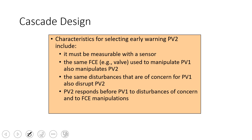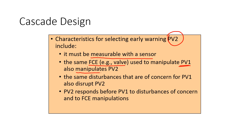Cascade design characteristics for selecting this early warning: in this case it might be flow, and it has to be measurable with a sensor. So we're adding an additional sensor to our feedback controller and setting up an inner feedback loop. We also have to use the same final control element — for example, a valve that's used to manipulate the outer loop PV also manipulates the inner loop PV. The same disturbances that are of concern for PV1 also disrupt PV2. And we need PV2 to respond to set point changes of the inner loop much faster than the outer loop.